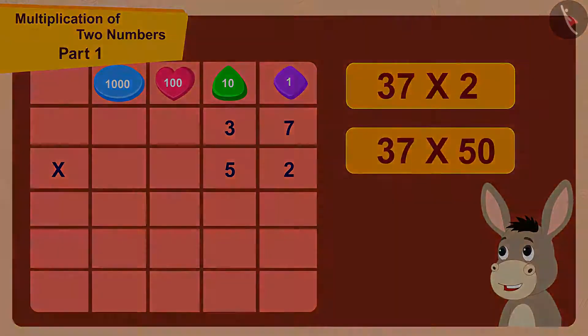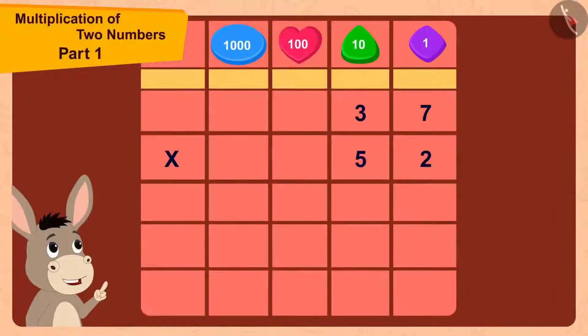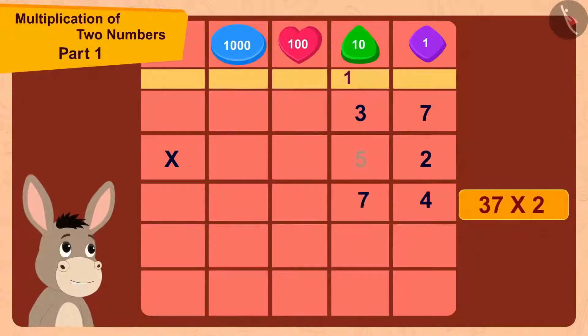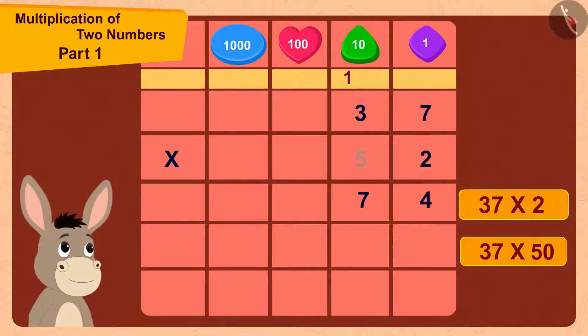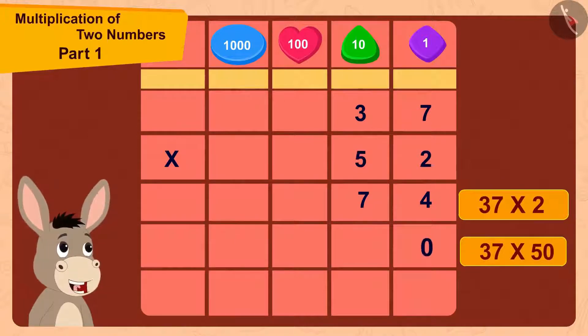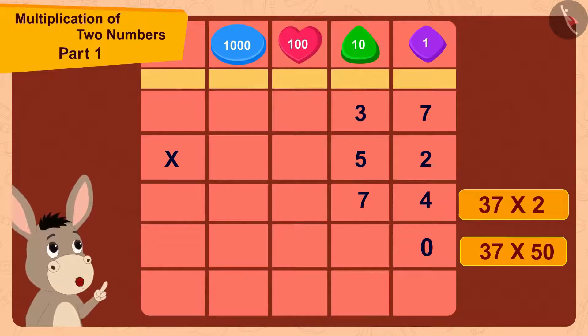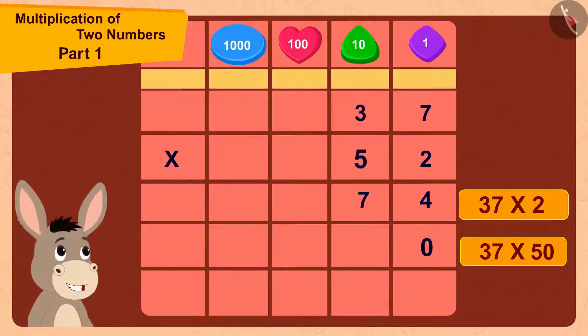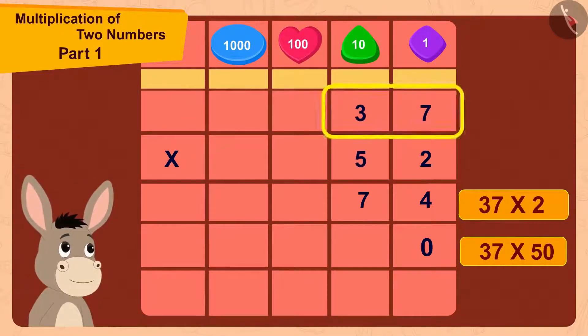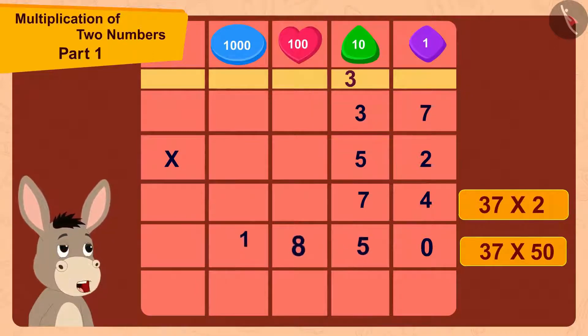Thought Bhola, 37 multiplied by 2 is 74. Now I will first write 0 here and then multiply 37 by 5. 37 times 5 is 185.